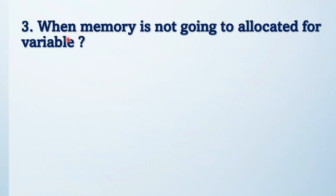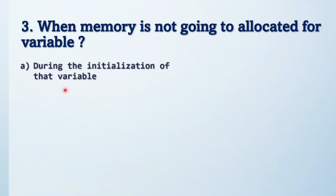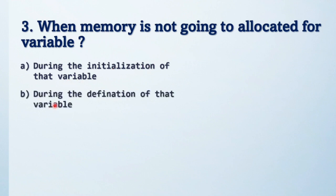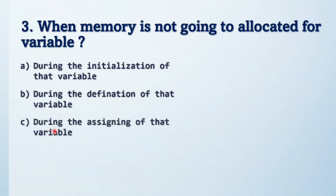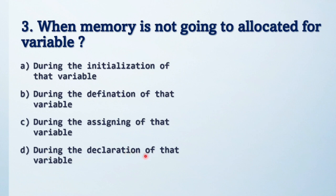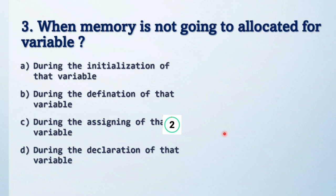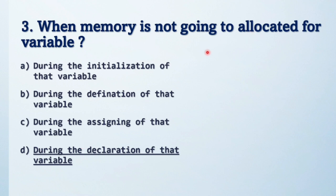Next question: when is memory NOT going to be allocated for a variable? Options are: A) during initialization, B) during definition, C) during assignment, D) during declaration. Let's see the output — the answer is D: during the declaration of that variable. Memory is not going to be allocated during declaration.